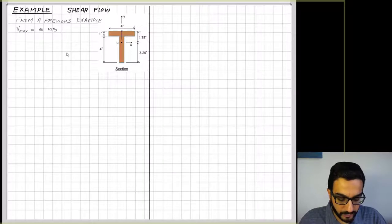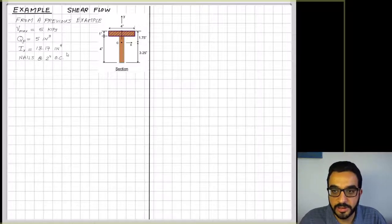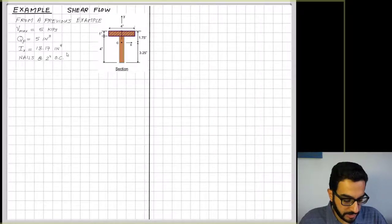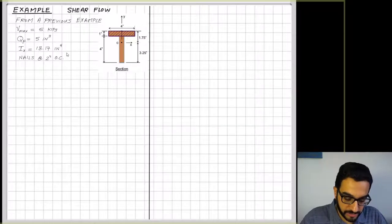From that previous lesson, we've seen this beam and its cross section. The beam was under a maximum shear force of five kips, and we analyzed the shear stress between the flange and the web. To do that, we calculated the q value, called qf, which is 5 inch to the power three. Part of the area property is given to us, we know the centroid location and the moment of inertia Ix where the moment is applied. The Ix here is the axis x, which is perpendicular to the direction of the shear.